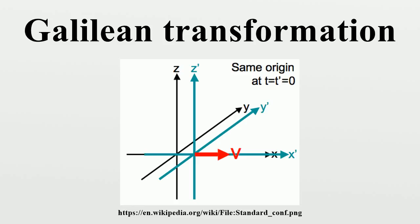Let x represent a point in three-dimensional space, and t a point in one-dimensional time. A general point in space-time is given by an ordered pair. A uniform motion, with velocity v, is given by where v in R3.